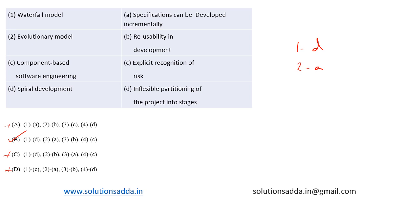Component-based Software Engineering relies on a reuse-based approach to define, implement, and compose loosely coupled independent components into a system. So we can say reusability — that is, 3 maps to 'reusability in development.'